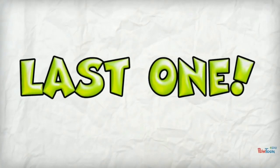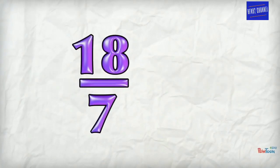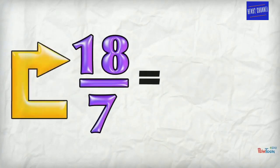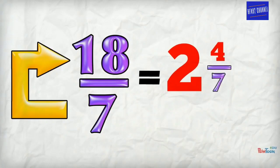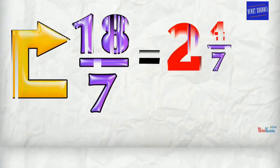Last one. 18 over seven. How many sevens in 18? Two sevens are 14, remainder four. Use the original denominator. We're done.